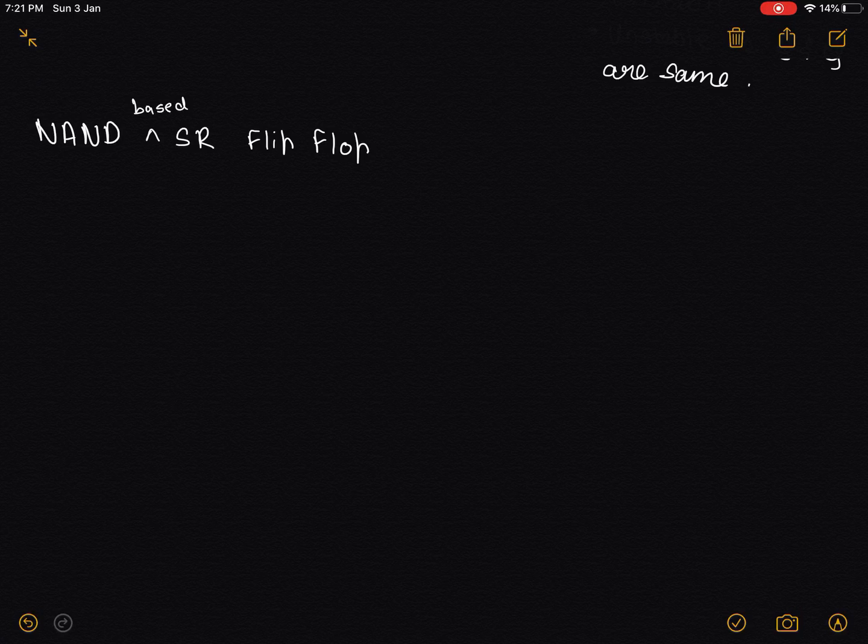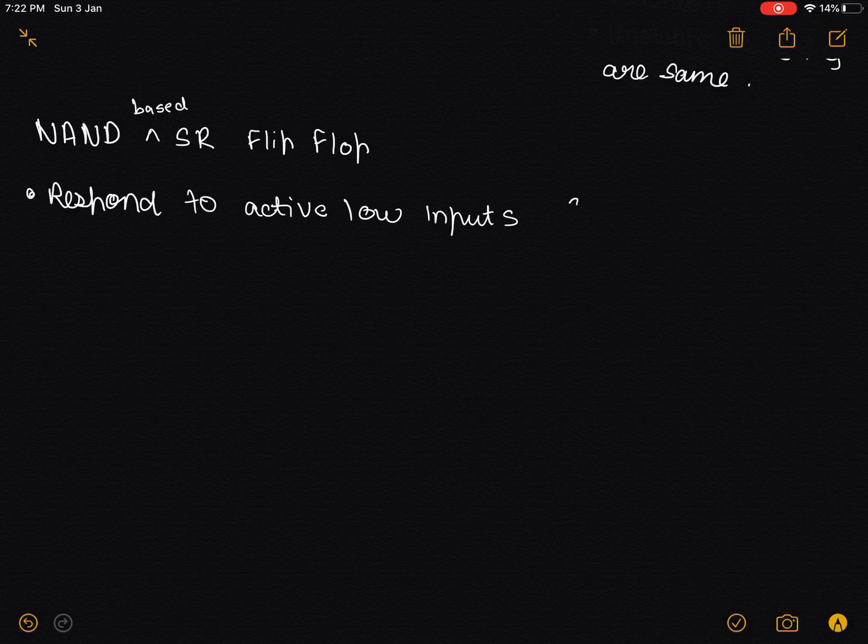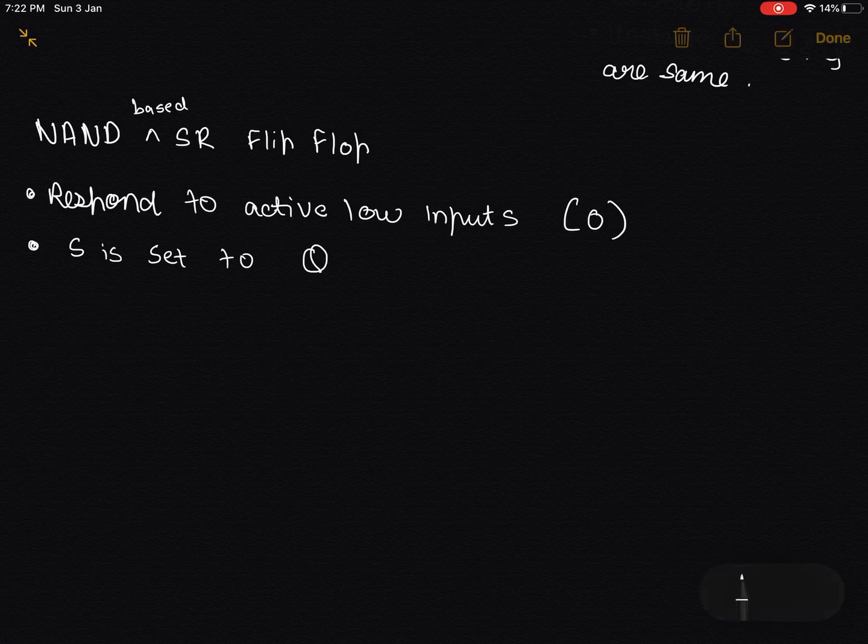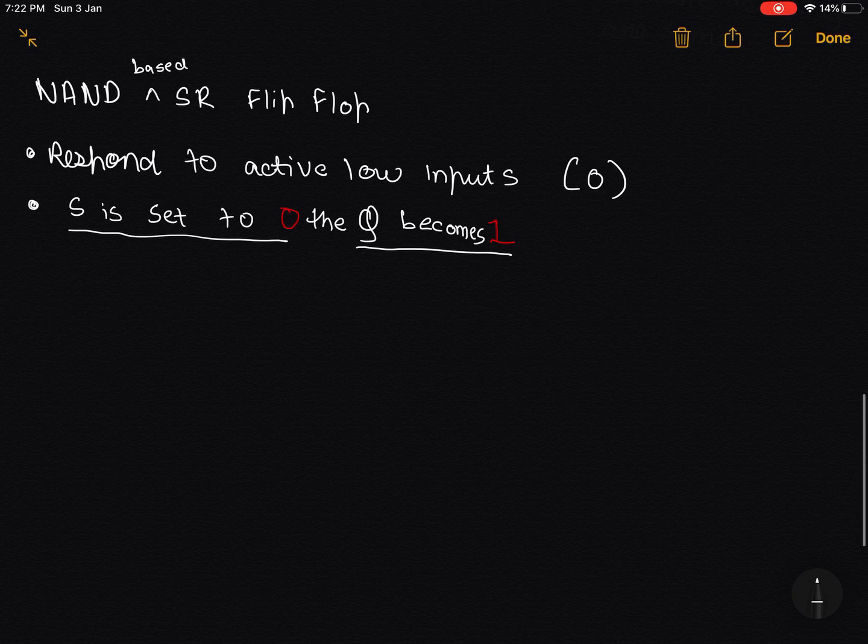As you realized, NOR-based SR flip-flops were active 1. So when an input of 1 was sent, Q would become 1 as well. But NAND-based flip-flops are quite different because they're just the exact opposite. They respond to active low inputs. Zero. So if NAND-based flip-flop, if S is set to zero, then Q becomes 1. S is set to zero, Q becomes 1. This is in NAND-based.